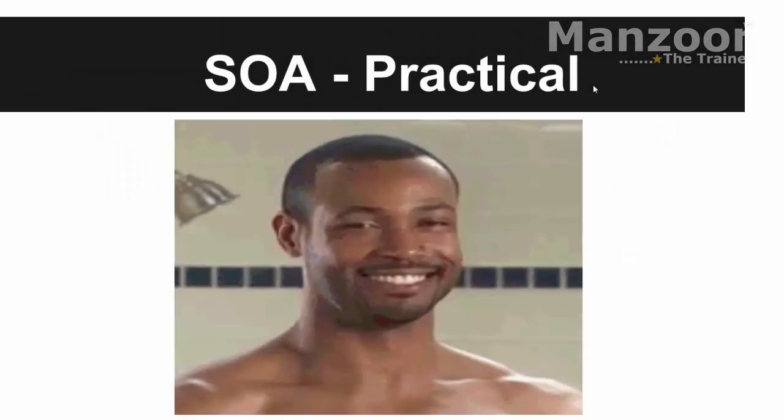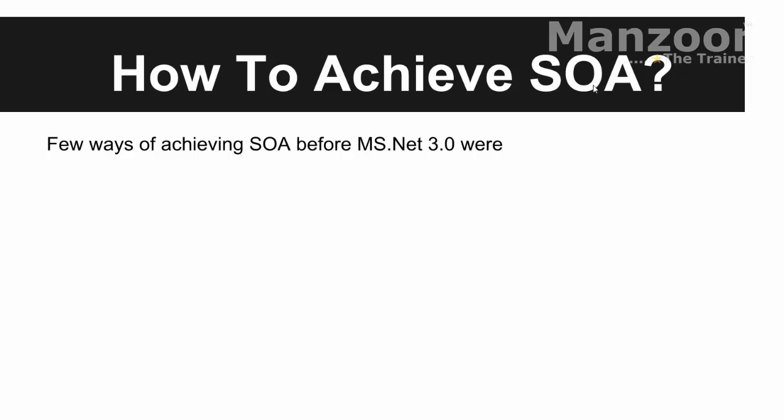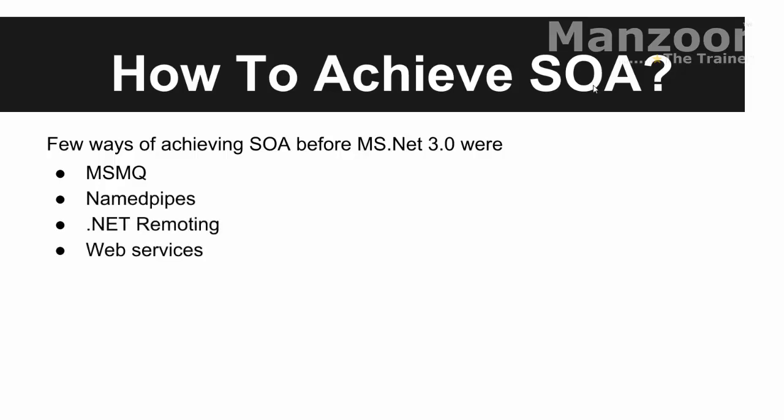Let us try to see how to achieve SOA. A few ways of achieving SOA before Microsoft .NET 3.0 were MSMQ (Microsoft Message Queuing), named pipes, .NET remoting, and web services. These were the popular ways of achieving service oriented architecture. Now let us have a brief understanding about each and every approach.